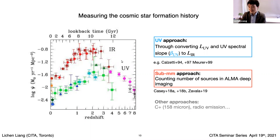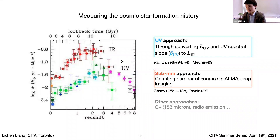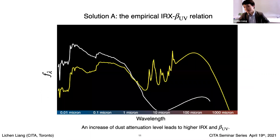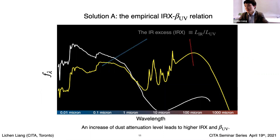There are also other approaches — for instance, JWST, which is what I'm currently working on, and hopefully in the not-too-distant future I will update you with progress in that direction. But today I'm going to focus on the first two approaches. Let's move to solution A, the so-called IRX-beta relationship. What is IRX-beta exactly? It's not difficult conceptually.